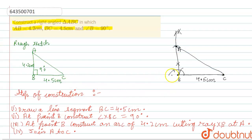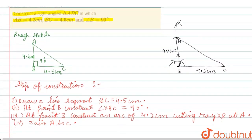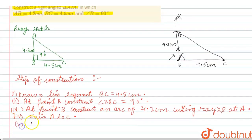And where AB is 4.2 cm. And step 5: Triangle ABC is a required right angle triangle. Clear?